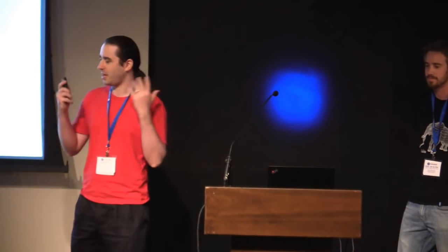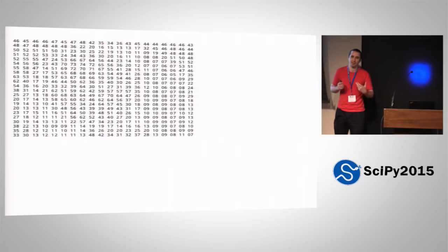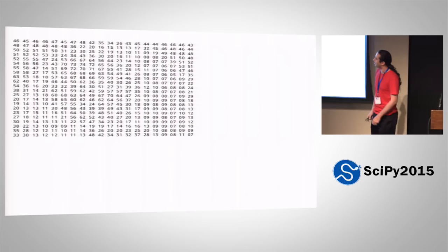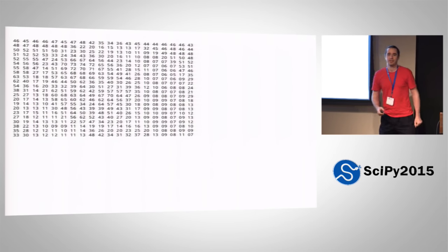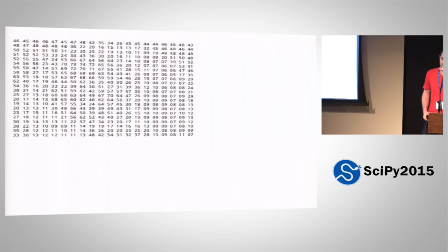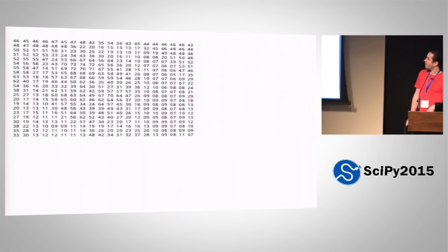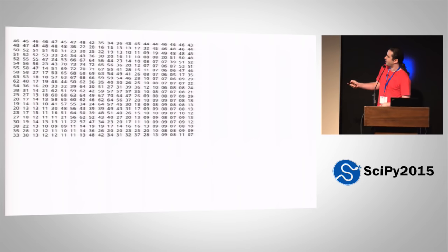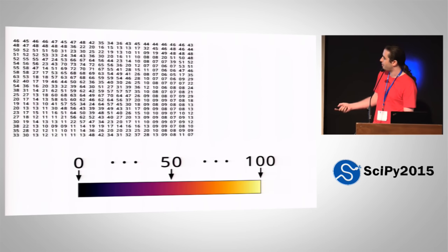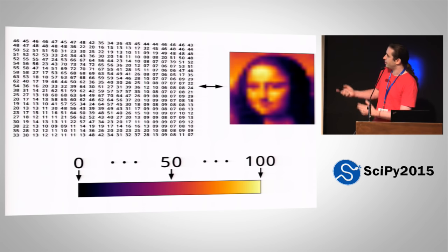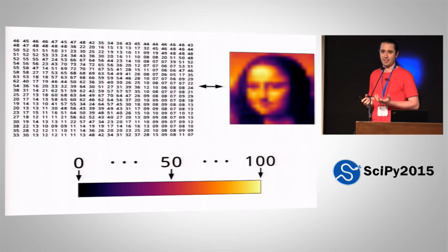Color maps are great because data doesn't make any sense when you just look at it. But if you take each of those values, map them to some corresponding color, suddenly you can see the structure that's in your data. You need color maps because they're an interface between your data and your brain, basically.